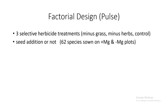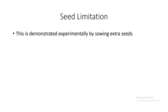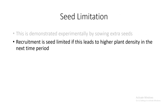The other part of Nash's Field consisted of pulse experiments — done once and then followed as effects either decline or amplify. Three herbicide treatments were applied: minus grass, minus herbs, and control; combined with seed addition or not, sowing 62 species not found at Silwood on plus-magnesium and minus-magnesium plots. Seed limitation is demonstrated experimentally only by sowing extra seeds: recruitment is seed limited if this leads to higher plant densities in the next time period, and not seed limited if seeds are eaten by granivores or if there are no suitable microsites for recruitment.